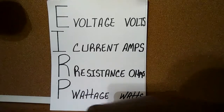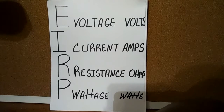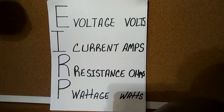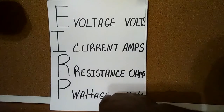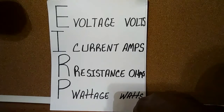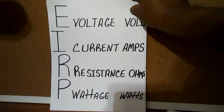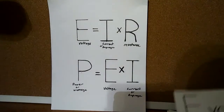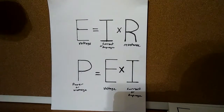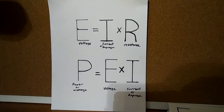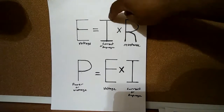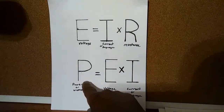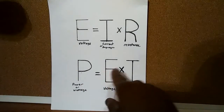And P — the scientific term for P is power, but in the electrical field we call it wattage and it's measured in watts. So let's take a look at the two main formulas of Ohm's Law, which are E equals I times R, and P equals E times I.